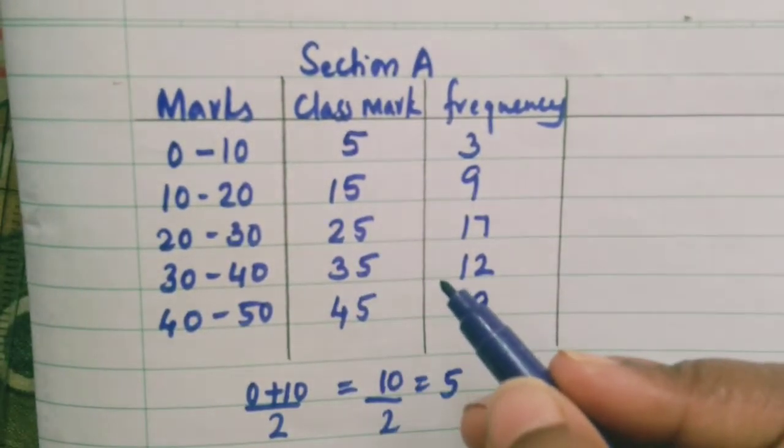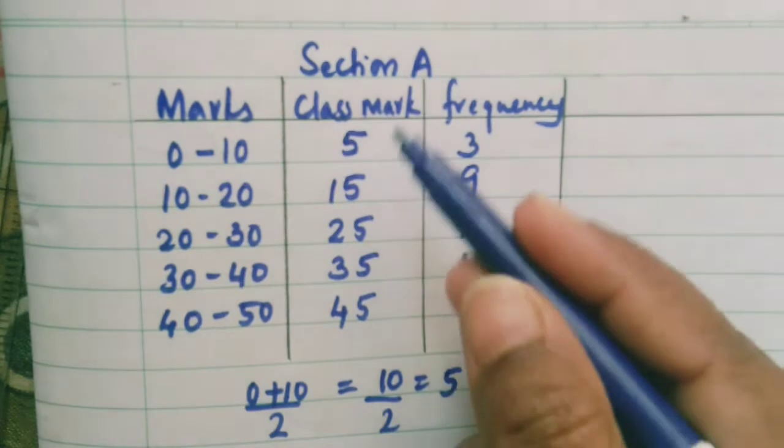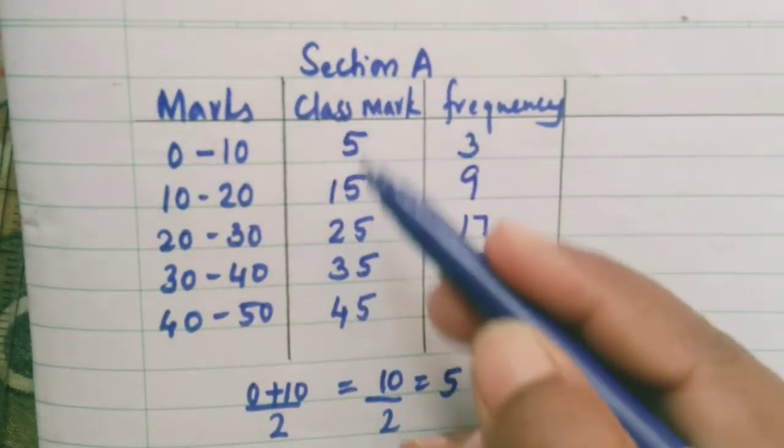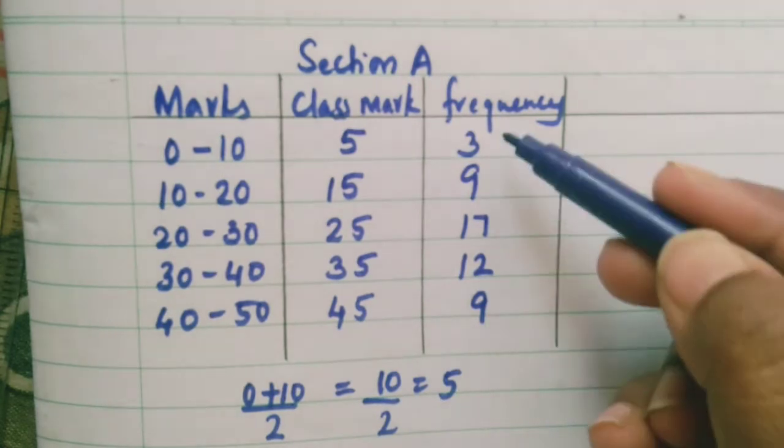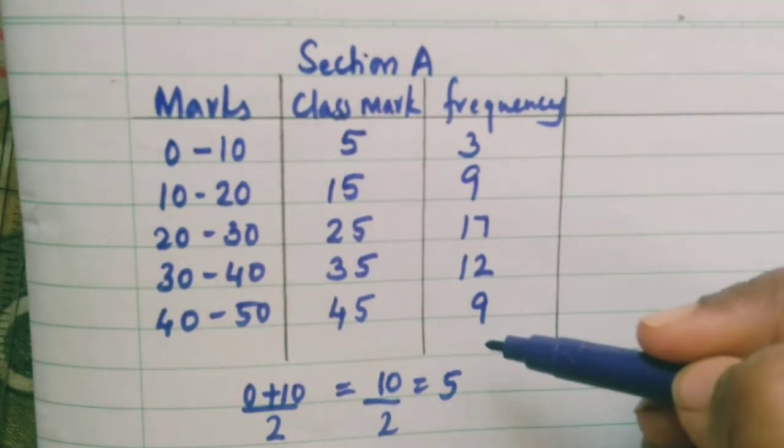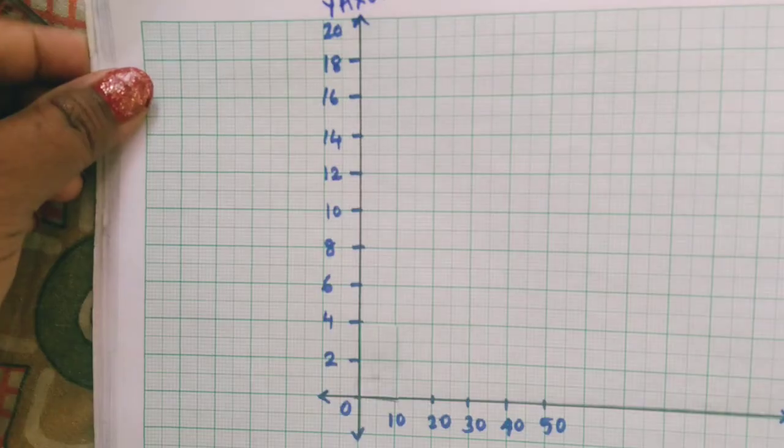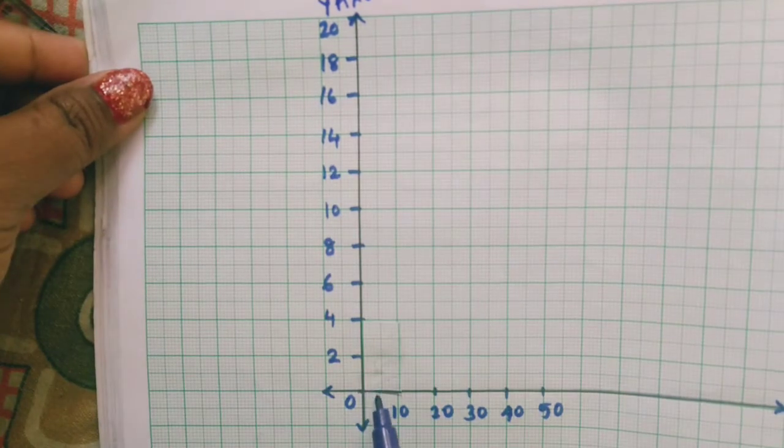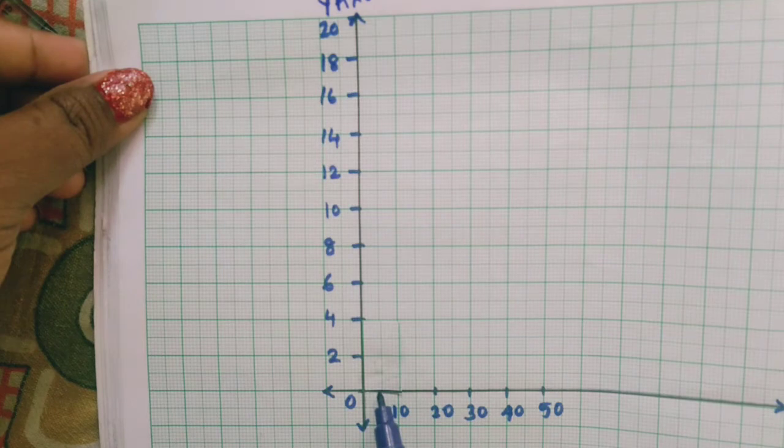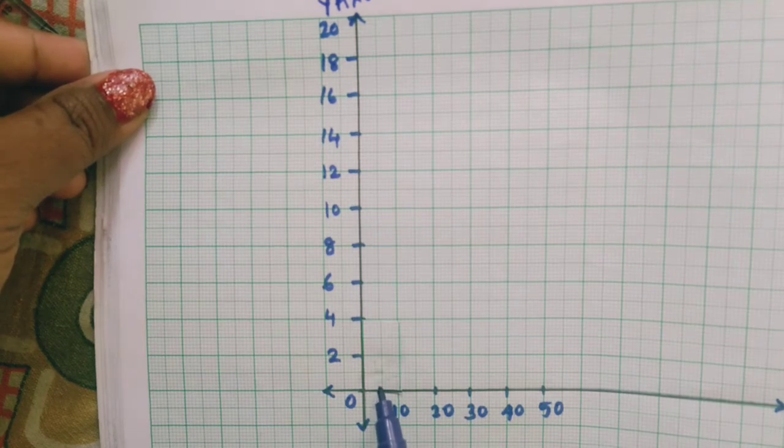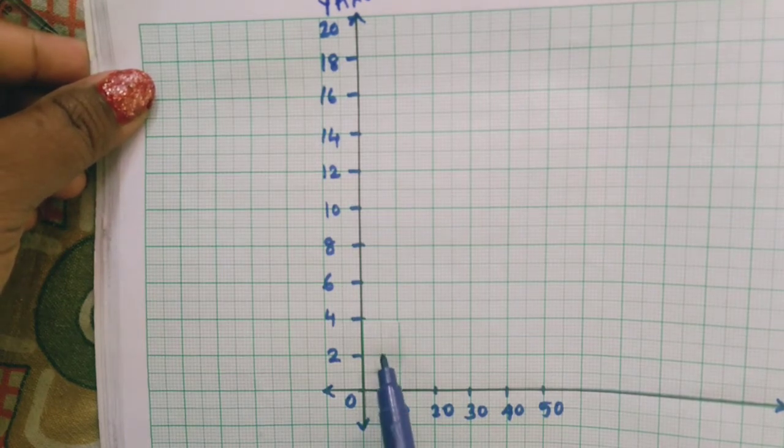Remember for frequency polygon the class mark plays the major role and this we are going to take along the x-axis and the frequency will be taken along the y-axis. Now on x-axis we will be taking this mid value and on y-axis you are going to take 3.